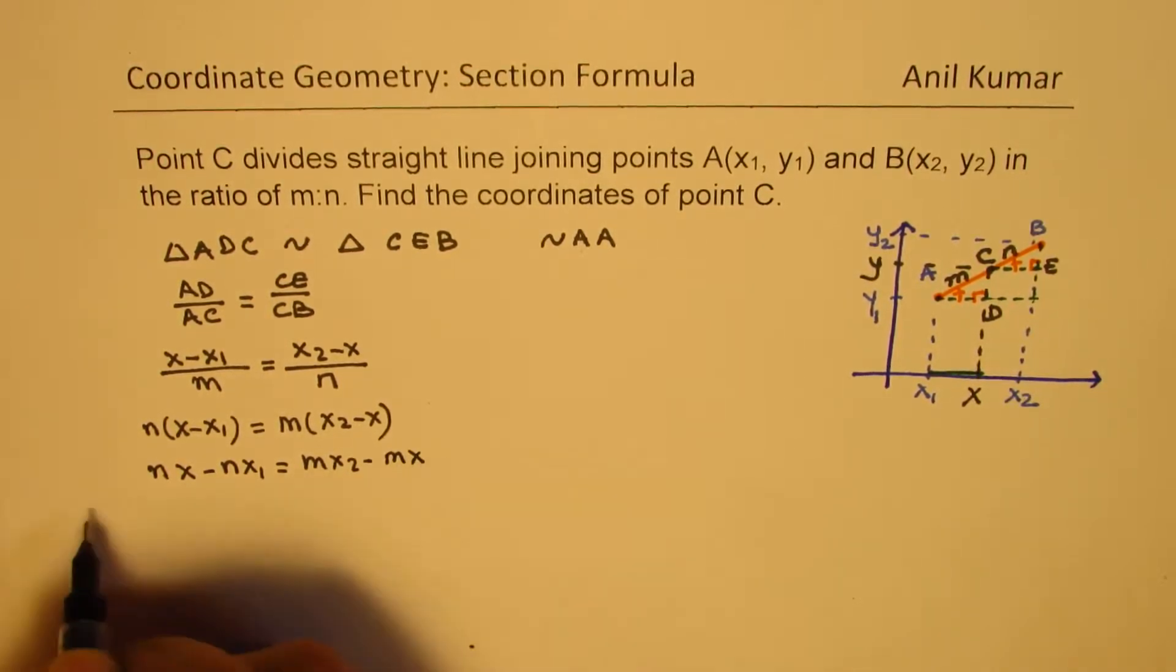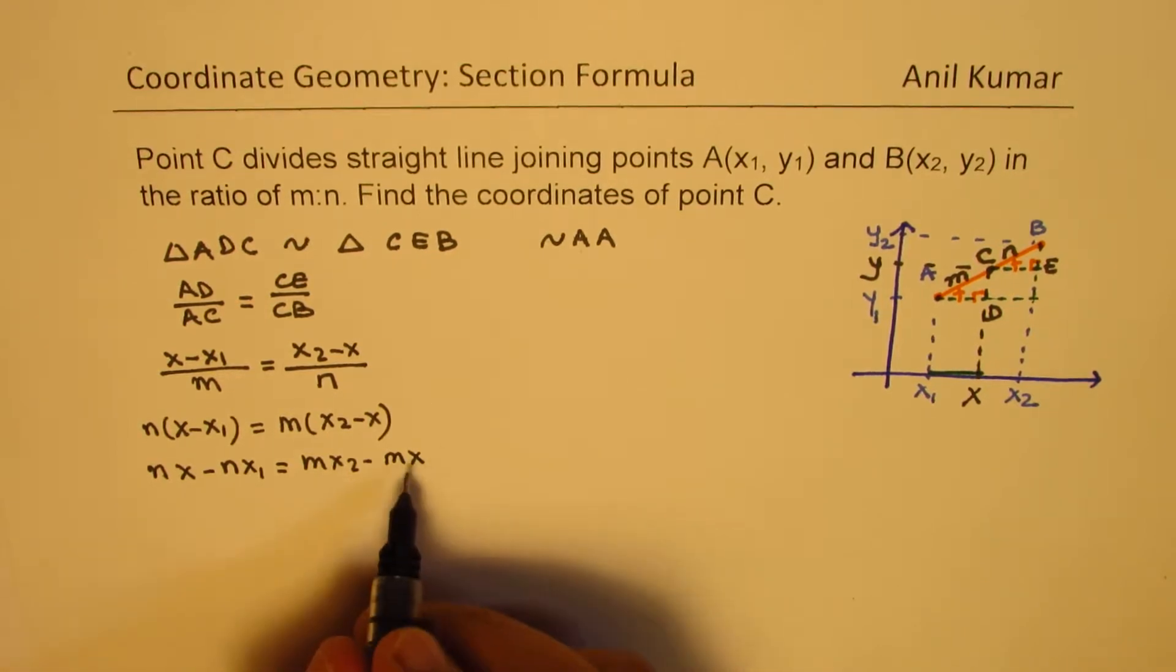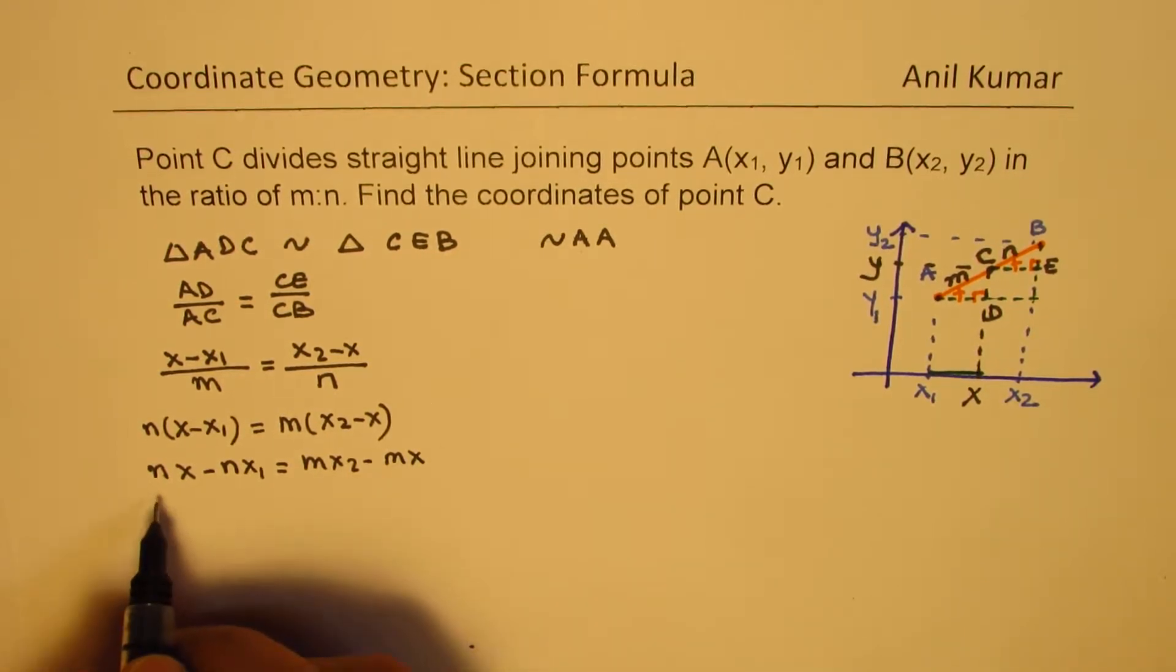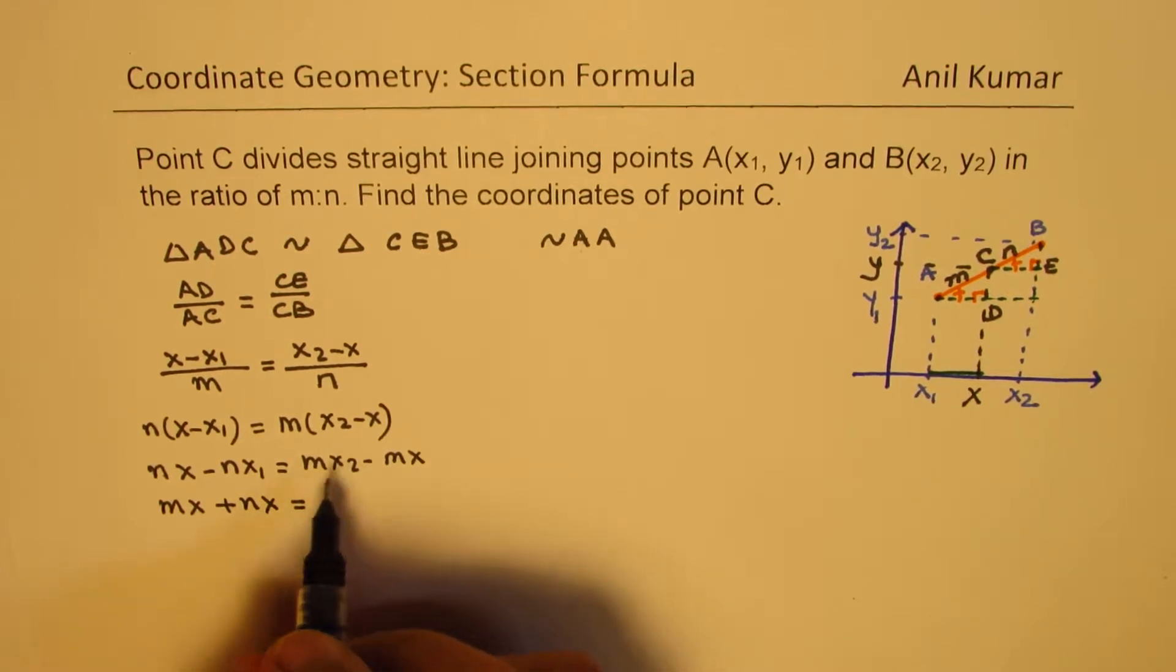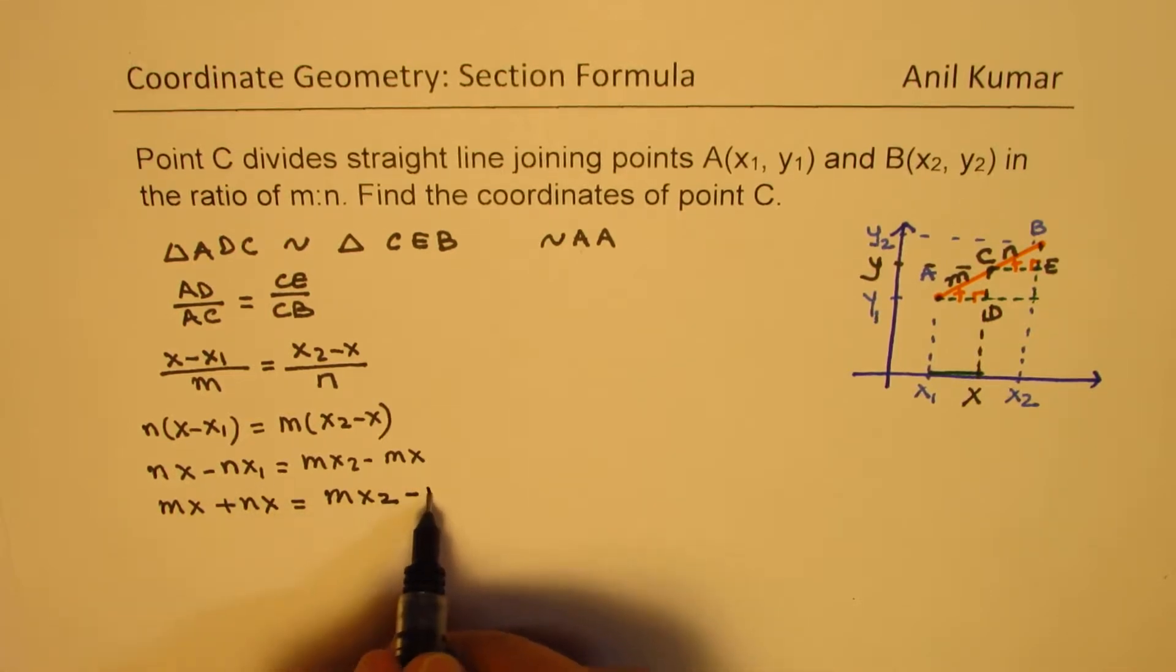Bringing it to the right side, I get mx plus nx equals to mx2 minus nx. So this minus x, so this minus becomes plus nx1.